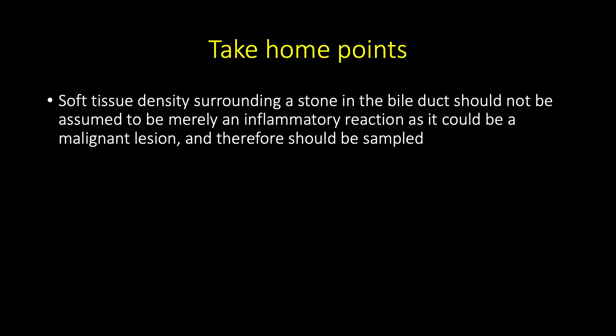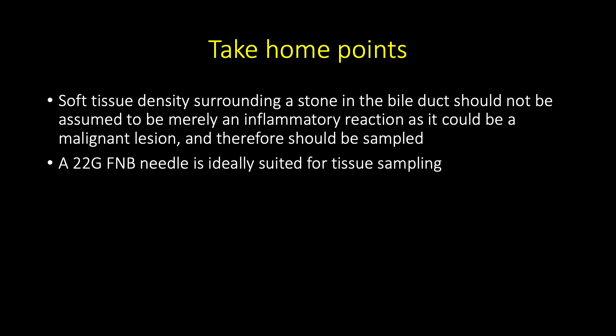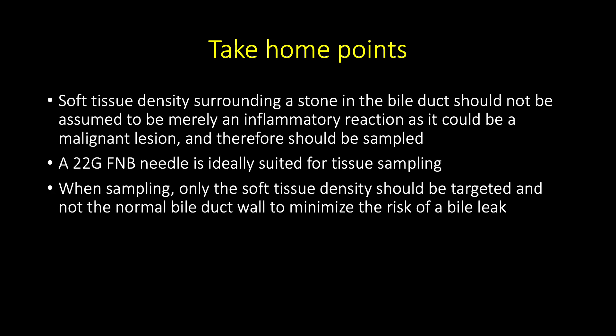The take-home points are: soft tissue density surrounding a stone in the bile duct should not be assumed to be merely an inflammatory reaction, as it could be a malignant lesion and therefore should be sampled. A 22-gauge FNB needle is ideally suited for tissue sampling. When sampling, only the soft tissue density should be targeted and not the normal bile duct wall, to minimise the risk of a bile leak.